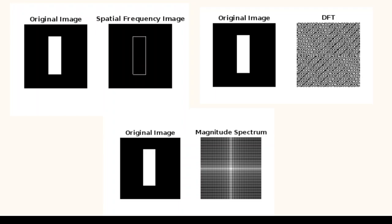In the previous video, we have seen that the frequency components can be categorized as high frequency or low frequency based on their corresponding spatial scale or rate of change. From the last video, let us recall that the frequency components obtained through the Fourier transform represent the distribution of frequencies and their magnitude in the image, providing information about the variation in pixel intensities across different spatial scales. Also, the Fourier transform decomposes an image into its frequency components by representing the image as a sum of complex sinusoidal functions of different frequencies and magnitudes.